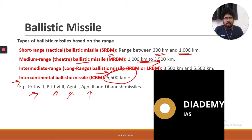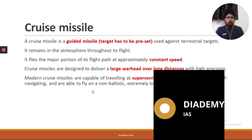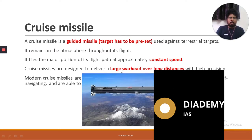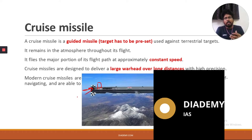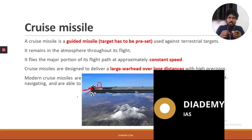India also has the Dhanush missile among its ballistic missiles. Now, what is a cruise missile? A cruise missile has an engine itself — it carries its own energy. It has a predefined path: we define the path and give it energy, and it travels on its own. It is a guided missile with a predetermined path.